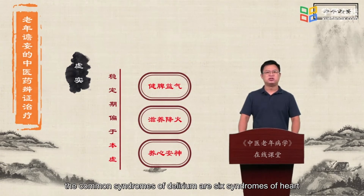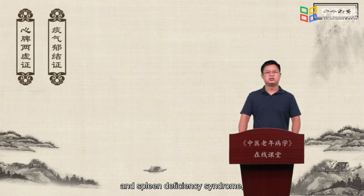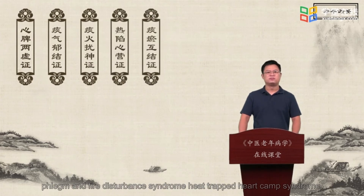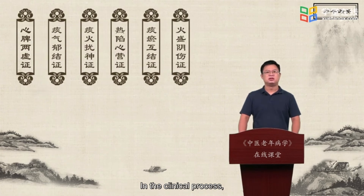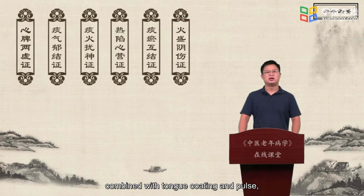The common syndromes of delirium include six syndromes: heart and spleen deficiency syndrome, phlegm stagnation syndrome, phlegm and fire disturbance syndrome, heat trapped heart camp syndrome, phlegm and blood stasis syndrome, and huishen yin injury syndrome. In clinical practice, the main symptoms and accompanying symptoms should be distinguished, combined with tongue coating and pulse, and the prescription should be used accordingly.